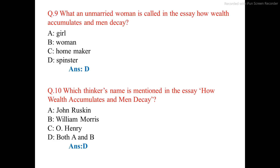Question number 10. Which thinker's name is mentioned in the essay How Wealth Accumulates and Men Decay? The correct answer is option D: both A and B — John Ruskin and William Morris.